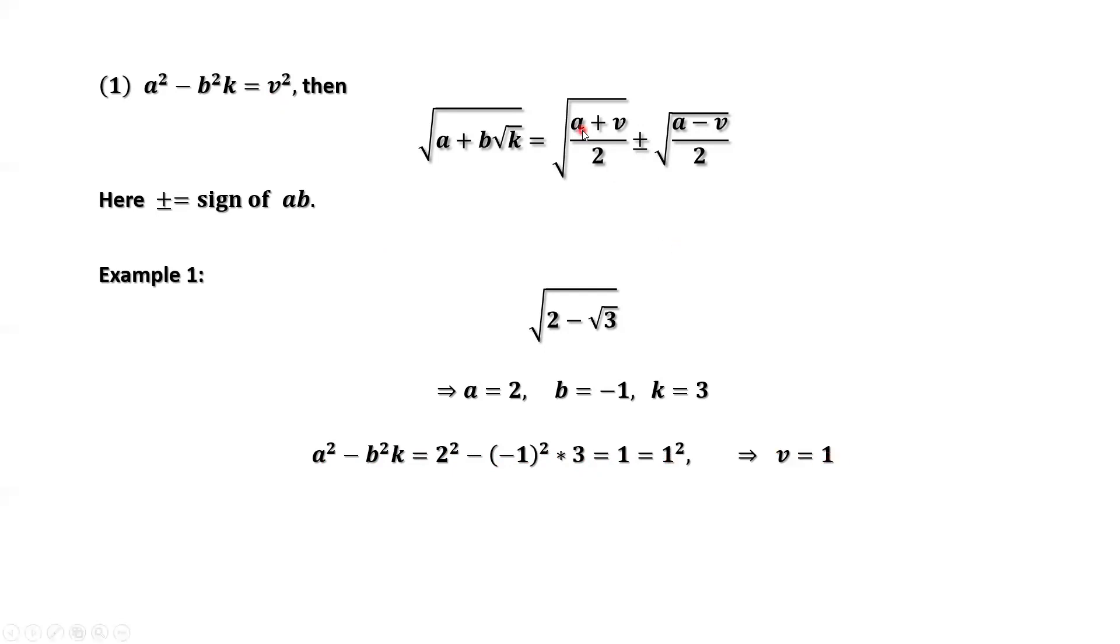v equals 1, we have a here, a equals 2. We only need to know the sign here. A is positive, B is negative, the product is negative. So here we should pick minus.